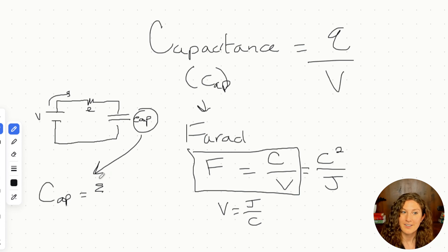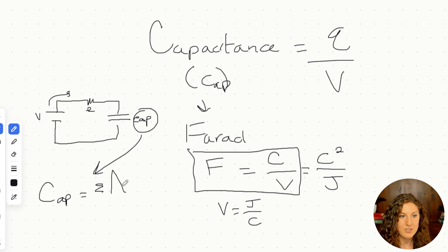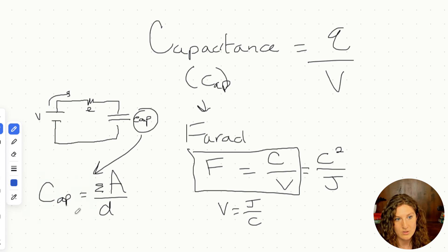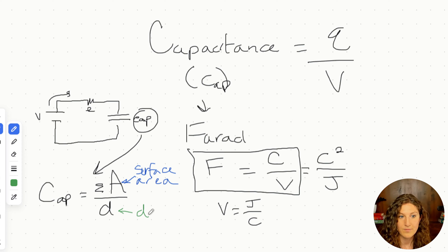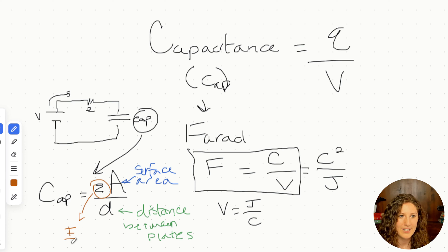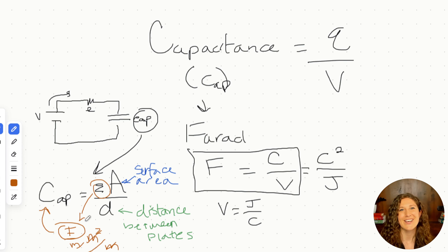The structural capacitance equation is: capacitance equals epsilon, the permissivity of the dielectric material (a constant in a given setup), multiplied by the surface area of the parallel plates, divided by the distance between the plates. The charge lines up on the surface of the plate, so the depth of the plate doesn't matter — it's all about the surface area. In terms of units, epsilon is in farads per meter, area in meters squared, and distance in meters, which works out to farads.